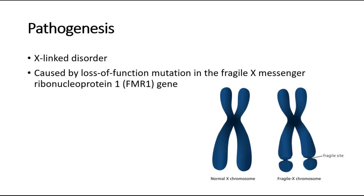For pathogenesis of Fragile X Syndrome, it is an X-linked disorder. It is caused by a loss of function mutation in the Fragile X messenger ribonucleoprotein 1, FMR1 gene. This leads to decreased or absent Fragile X messenger ribonucleoprotein, FMRP.